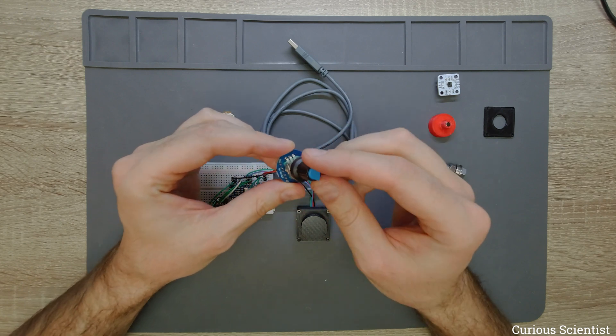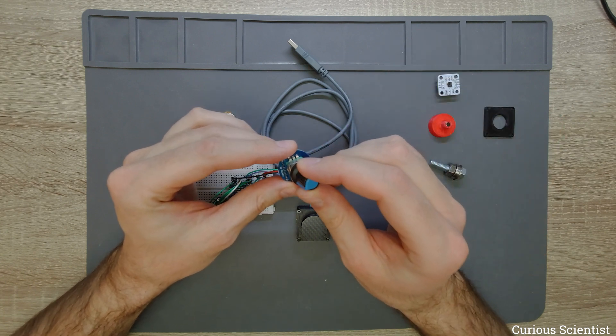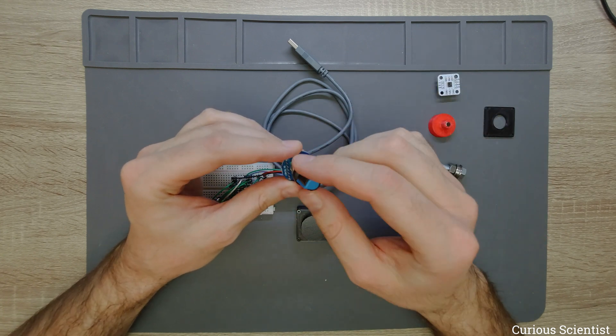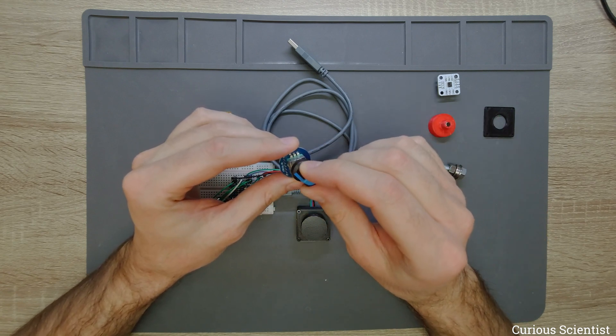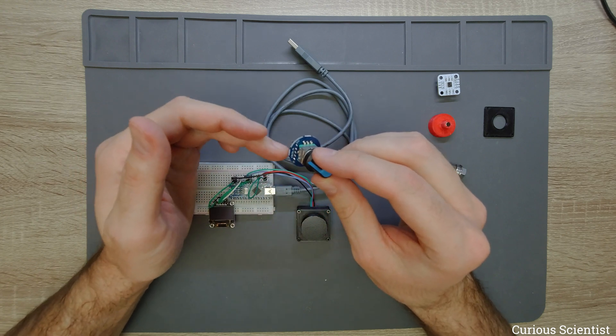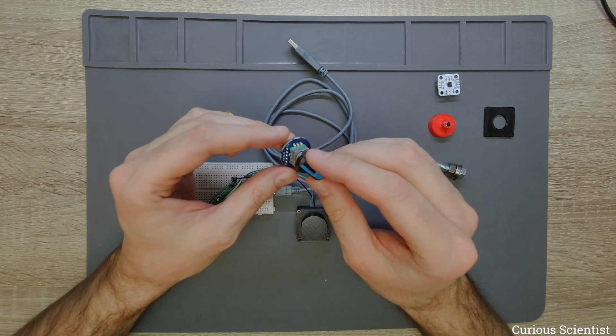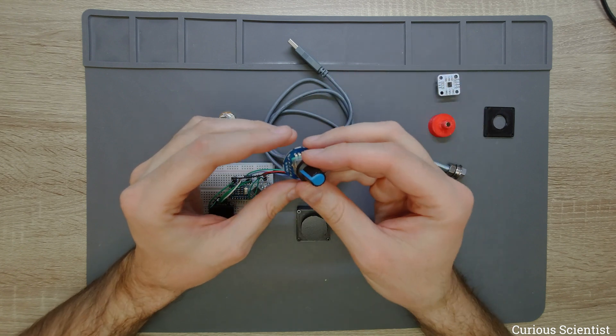So it has, depending on the encoder, 16 or 20 well-defined positions along the 360 degrees circle. And based on the direction of the rotation, the two pulses which come out from the DT and CLK pins will determine the signals.